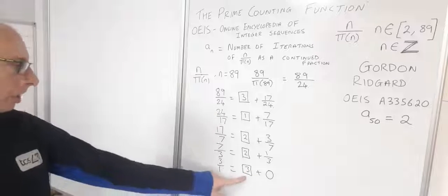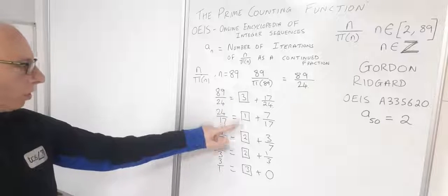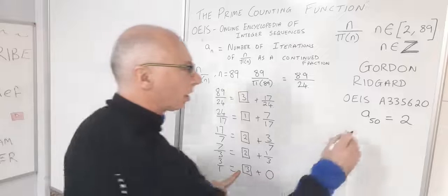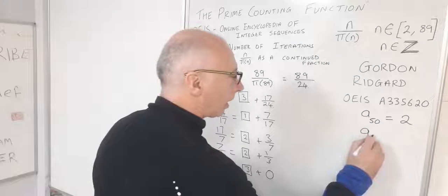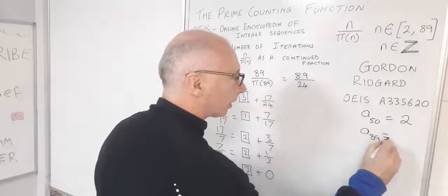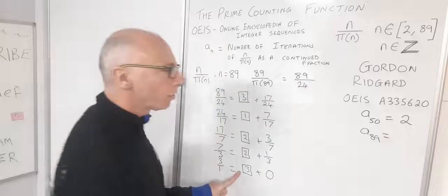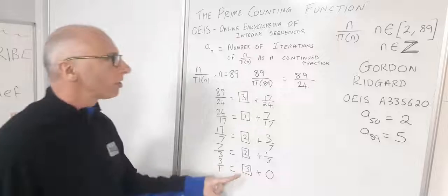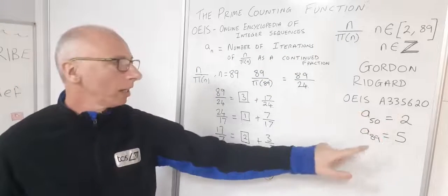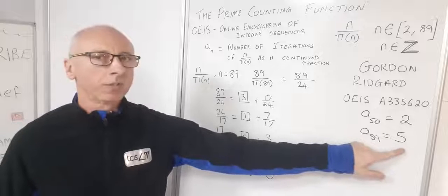So now 1, 2, 3, 4, 5. We know there's 5 iterations. So A(89) equals 5. There's 5 iterations. As far as this number sequence is concerned of this entry here, A(89) equals 5.